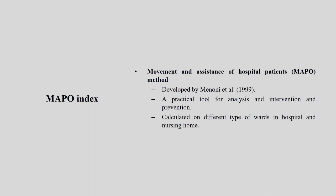Mostly nursing staff are exposed to this type of scenario and they are the main subjects for this particular tool. MAPO is only useful when we are talking about patient handling by nursing staff at any hospital. It is a movement and assistance of the hospital patient method — M-A-P-O, MAPO — developed in 1999. It is a practical tool for analyzing, intervening, and going for prevention strategies to help nursing staff while handling patients. It also calculates different types of wards available in the hospital and different nursing homes.